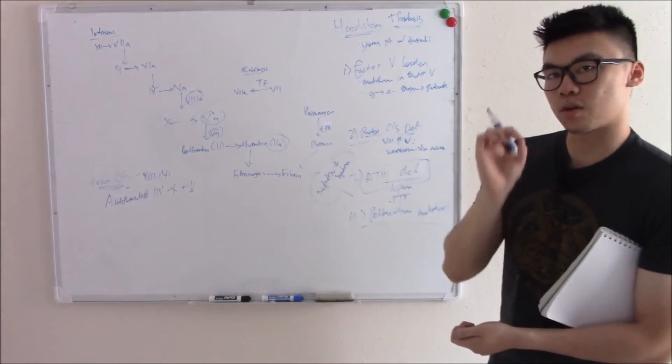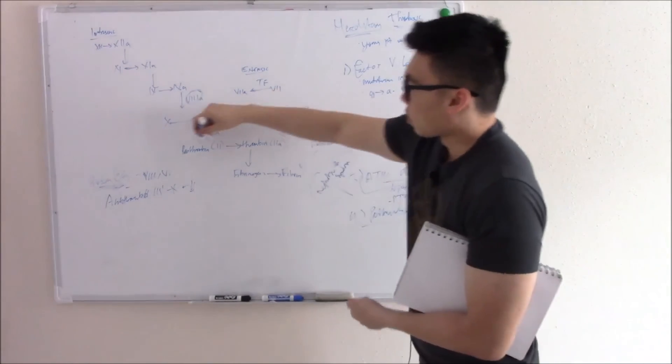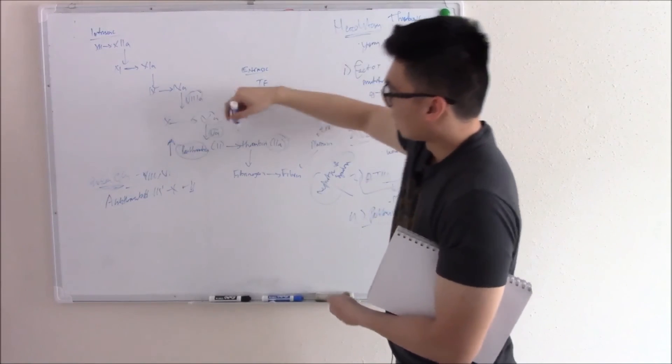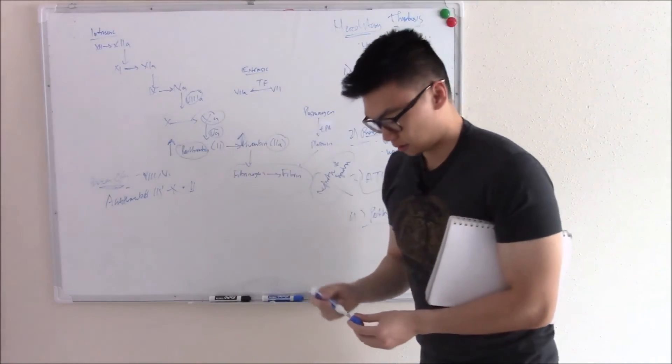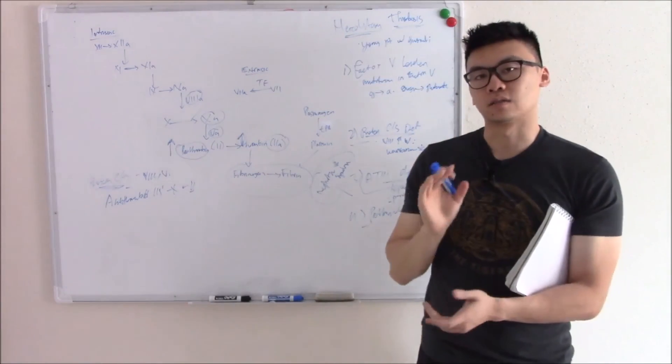Last but not least, prothrombin mutation. This is a mutation in your prothrombin gene makes prothrombin increase in expression. That increases, then thrombin increases. If that increases, then clots increase. That's how it causes increased thrombin.